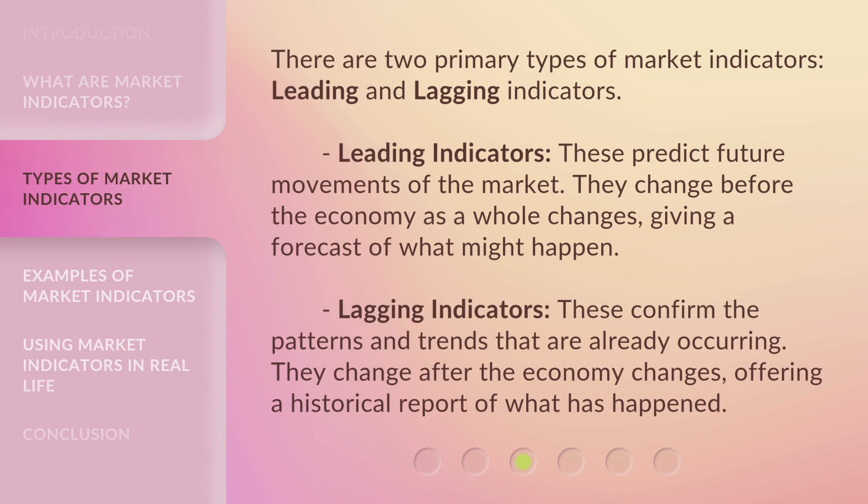There are two primary types of market indicators: leading and lagging indicators. Leading indicators predict future movements of the market — they change before the economy as a whole changes, giving a forecast of what might happen. Lagging indicators confirm the patterns and trends that are already occurring; they change after the economy changes, offering a historical report of what has happened.